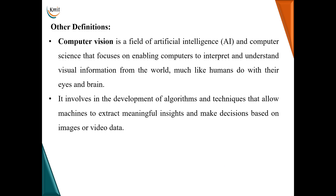Here are some other definitions. Computer vision is a field of AI and computer science that focuses on enabling computers to interpret and understand visual information. It involves the development of algorithms and techniques that allow machines to extract meaningful insights and make decisions based on images or video data.